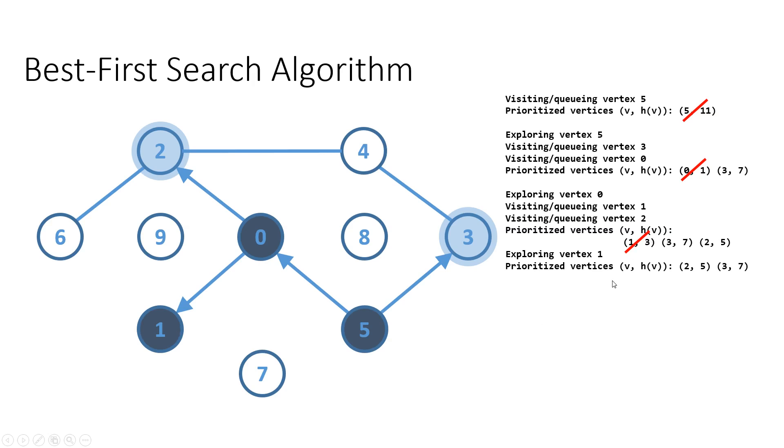We also crossed it from the priority queue. The next vertex that is going to be removed is again the one with the lowest number or the highest priority and that's vertex two.